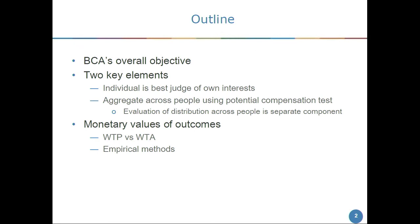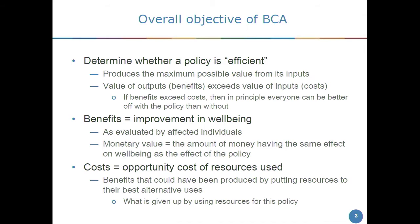I'm going to talk about some of the underlying concepts and framework for benefit-cost analysis — what is it we're actually trying to do. The overall objective of benefit-cost analysis is to determine whether a policy is efficient — allocatively, economically efficient. What efficiency means here is that it produces the largest possible benefits given the resources consumed. If the value of the benefits exceeds the value of the resources consumed, then in principle everybody could be better off if benefits are distributed appropriately.